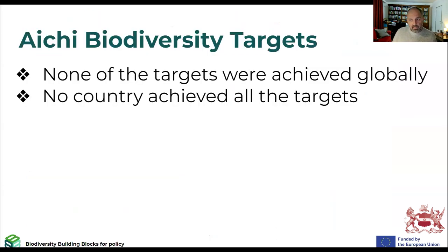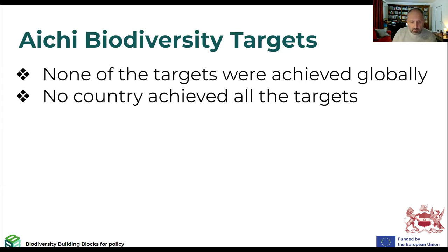Back in 2011, the Convention on Biological Diversity set the Aichi biodiversity targets to try and stem the rate of biodiversity loss. These were evaluated recently, and as you probably know, none of these targets were achieved globally, and none of the countries achieved all of the targets — although, to be fair, a few countries achieved some. This is not very encouraging, but we put those aside.